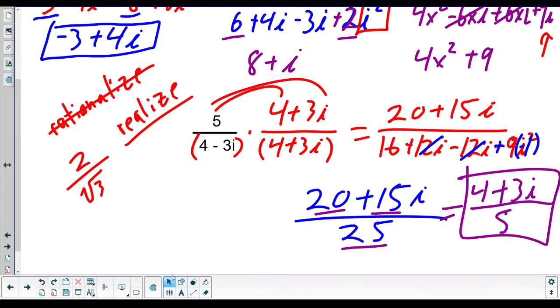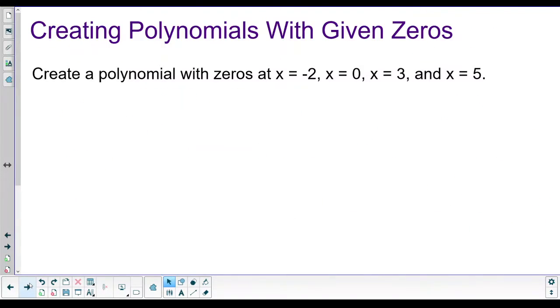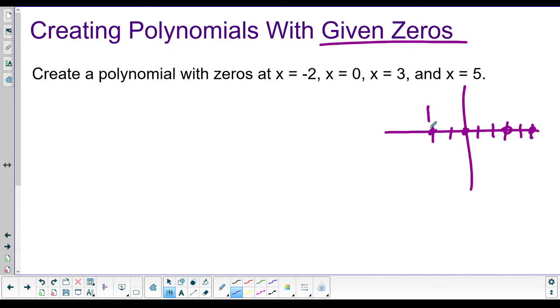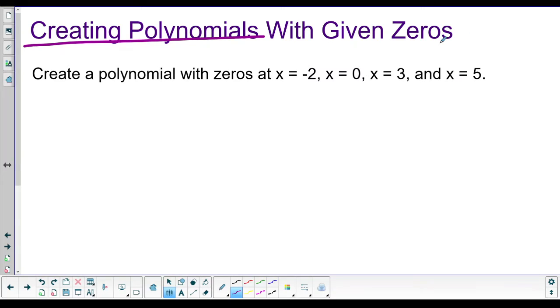Now we need to create a couple of polynomials. We need to create polynomials if they give us some zeros. So it says create a polynomial with zeros at x equals negative 2, x equals 0, x equals 3, and x equals 5. That just means if you graph this thing at negative 2, it'll cross the x-axis. At 0, it'll cross the x-axis. At 3, and at 5.